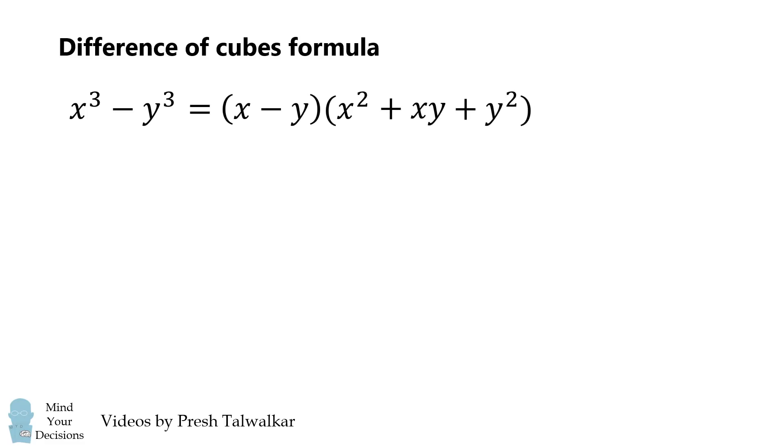x cubed minus y cubed is equal to the quantity x minus y multiplied by the quantity x squared plus x times y plus y squared.